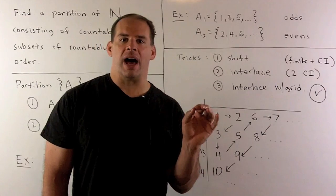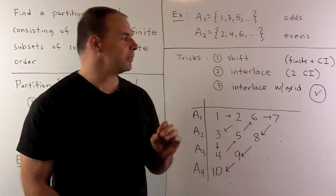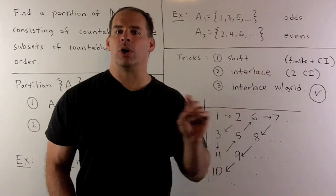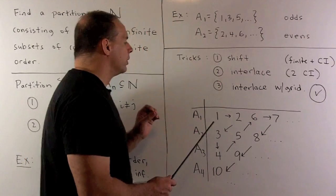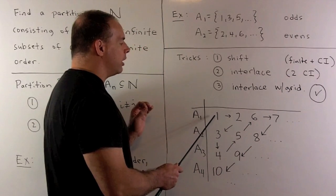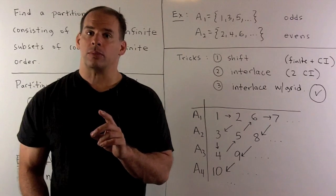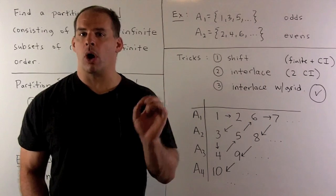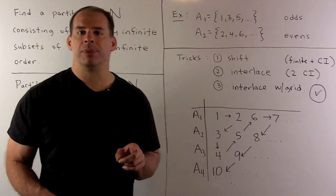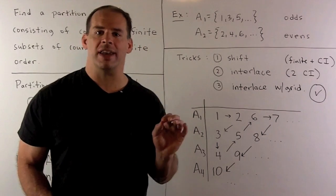For our case — the one step beyond — instead of intertwining or interlacing on a line, we're going to intertwine or interlace on a grid. We'll have this grid, say in the third quadrant. Start in the upper left-hand corner with one, and then zigzag back and forth going through every entry in the grid. Each natural number occurs in exactly one row and column. If we take our A's to be the rows, then the intersection of any two A's is empty. And by construction, the union of all the A's equals the natural numbers — so we have a partition of the natural numbers.